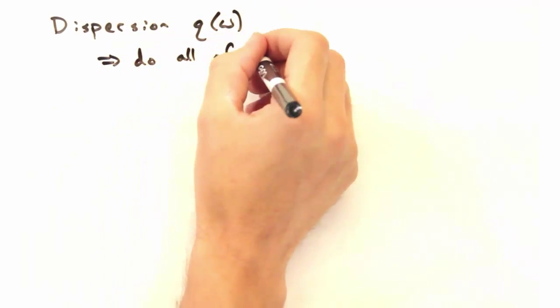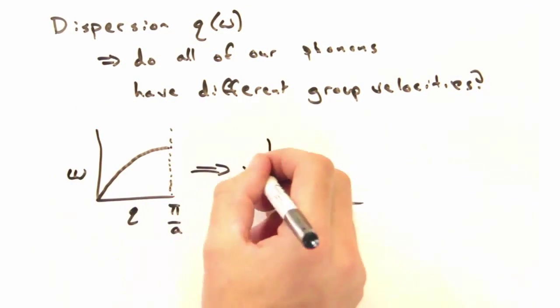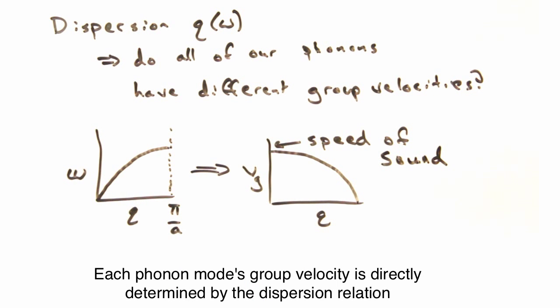Going back to our dispersion then, does that mean that all of our phonons have different group velocities? Looks like it's a good time for a recap.